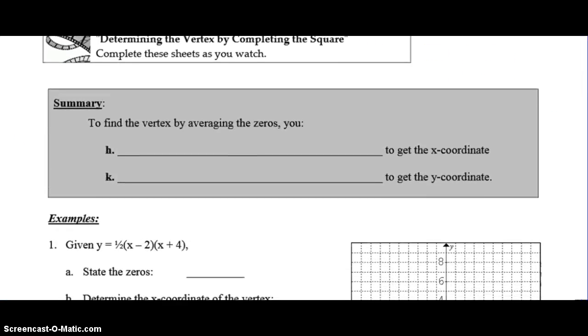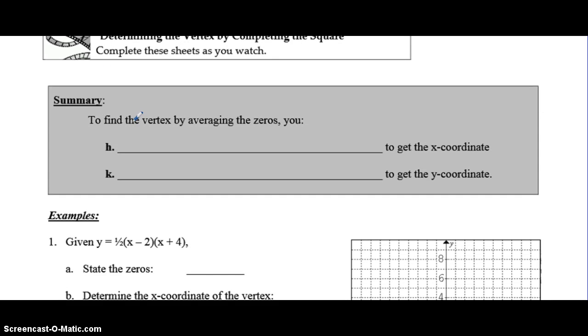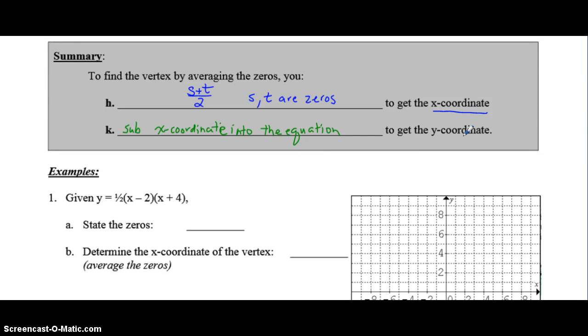So let me show you, let's just summarize this first and then I'll show you an example. So to find the vertex by averaging the zeros, what you do is you take the zeros, s and t, and you add them together and divide by 2 and that will give you the x-coordinate. Then to get the y-coordinate you substitute the x-coordinate into the equation. So that's all it is. It tends to be a little bit faster than completing the square but you have to either have your question in factored form or you have to be good at factoring to get it into factored form.